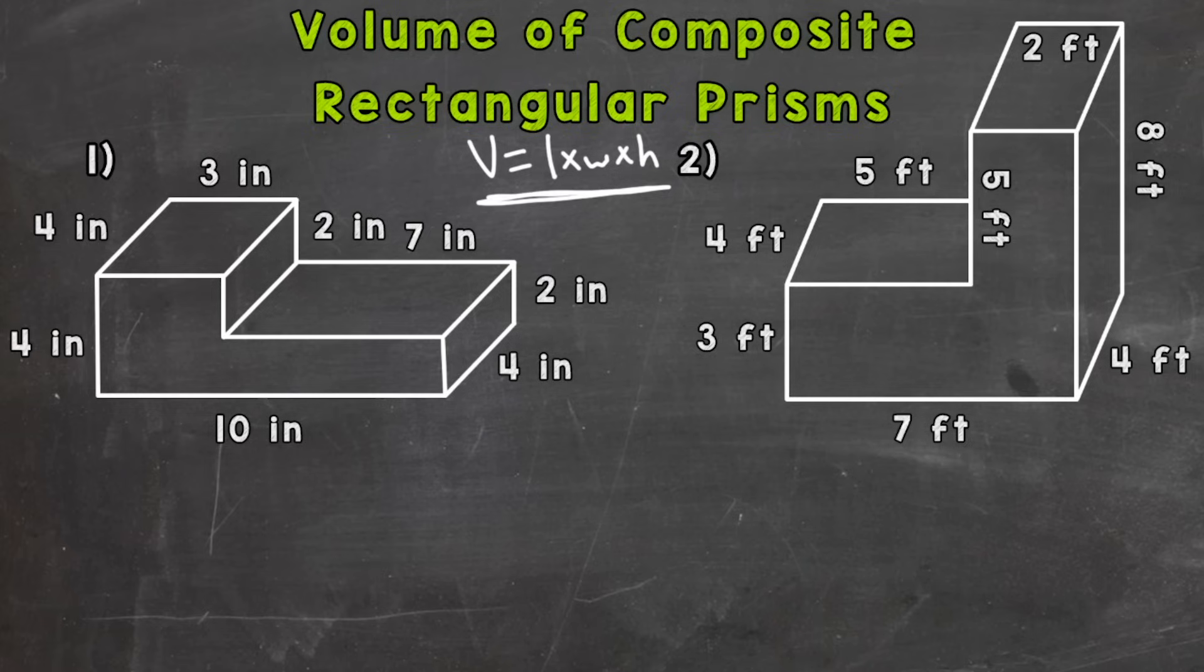So let's jump right into number one here. And when we have composite rectangular prisms, the first thing we want to do is cut that figure into two separate rectangular prisms. So I'm going to draw a line here that's going to separate this into a left and right rectangular prism.